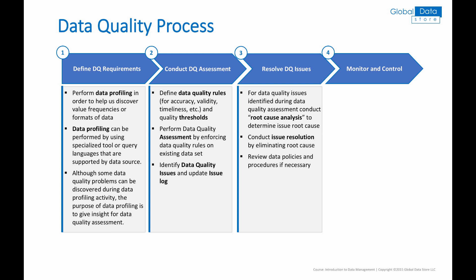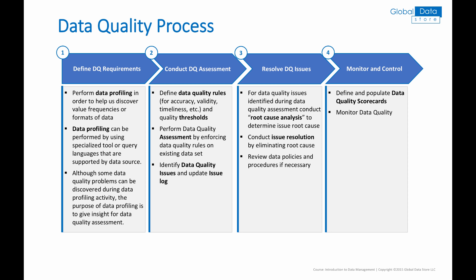Resolving data quality issues consists of the following steps: 1. For data quality issues identified during data quality assessment, conduct root cause analysis in order to determine the root cause of the issue. 2. Conduct issue resolution by eliminating the root cause of the issue. 3. Review data policies and procedures if necessary. Finally, monitor and control data quality, which consists of: 1. Define and populate data quality scorecards. 2. Monitor data quality.